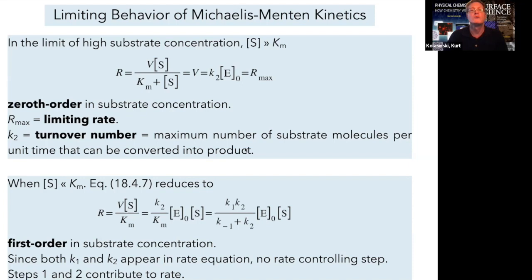So at low substrate concentration, we get first order kinetics as expected, and at high substrate concentration compared to the size of the Michaelis constant, we get zeroth order, again, consistent with the behavior that's usually observed.